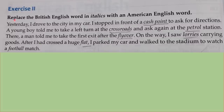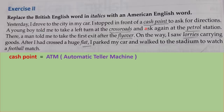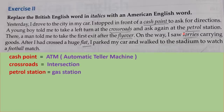Now the next exercise: replace the British English word in italics with an American English word. All the italics are now in British English and we have to change them into American English. 'Yesterday I drove to the city in my car. I stopped in front of a cash point' — cash point is called 'ATM' (automatic teller machine) in American English. 'A young boy told me to take a left turn at the crossroads' — crossroads is called 'intersection' in American English. 'Ask again at the petrol station' — petrol station is called 'gas station.'